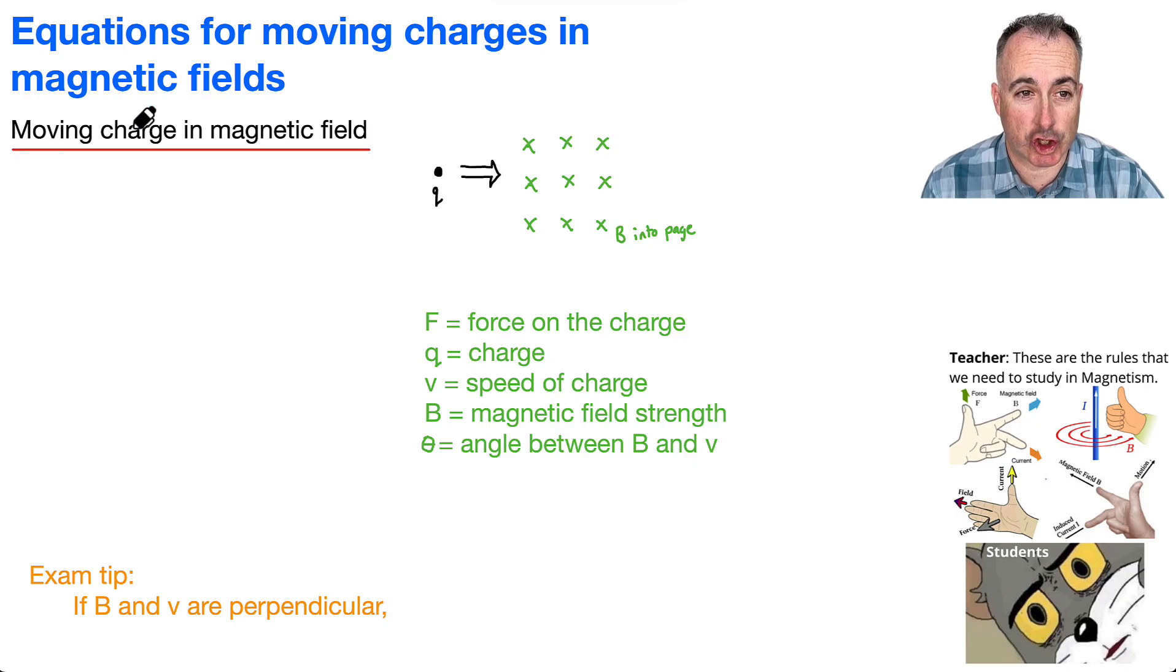So first of all, what happens if you have just a charge that's moving in a magnetic field, like a little electron or a proton or just a single charge that's entering some kind of magnetic field?